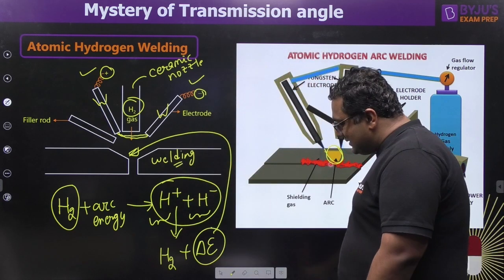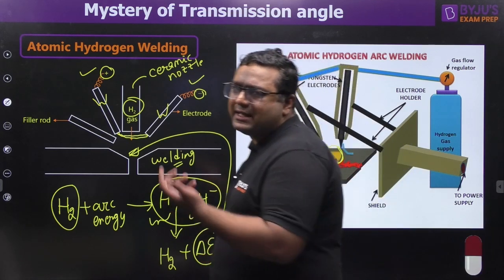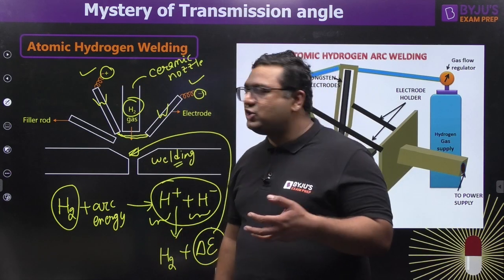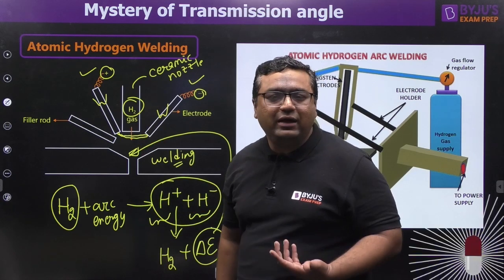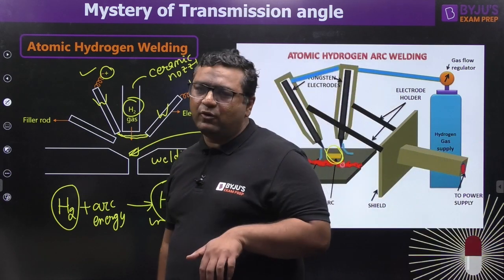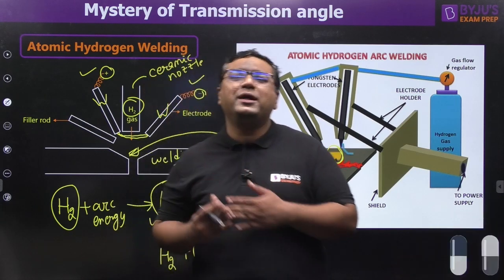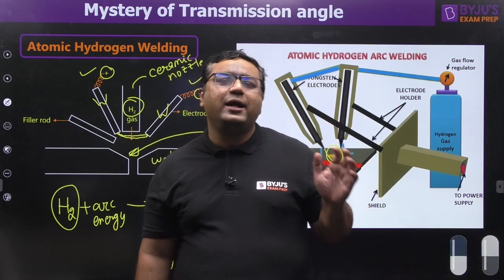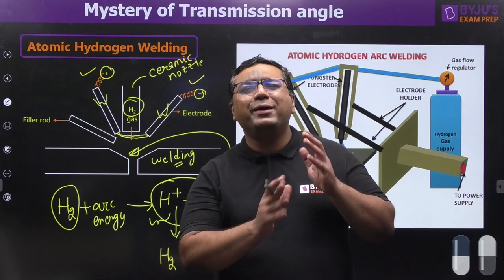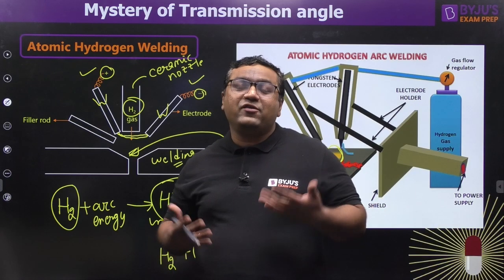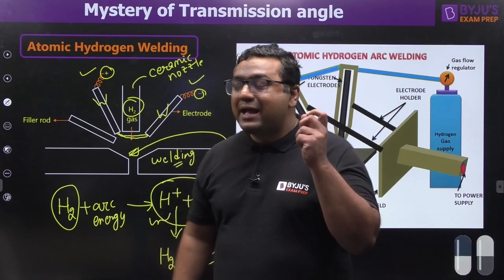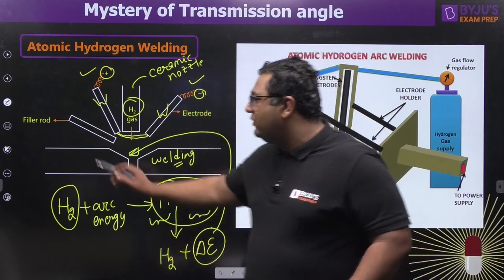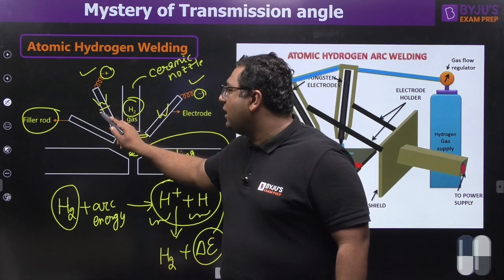This recombination is an exothermic reaction, but we are not using the arc energy directly for welding, so it is not arc welding. And combustion is not happening, so it is not gas welding either. Atomic hydrogen welding does not come under arc welding or gas welding — it is a separate type. Some people call it a combinational type of welding, and different people have different points of view.